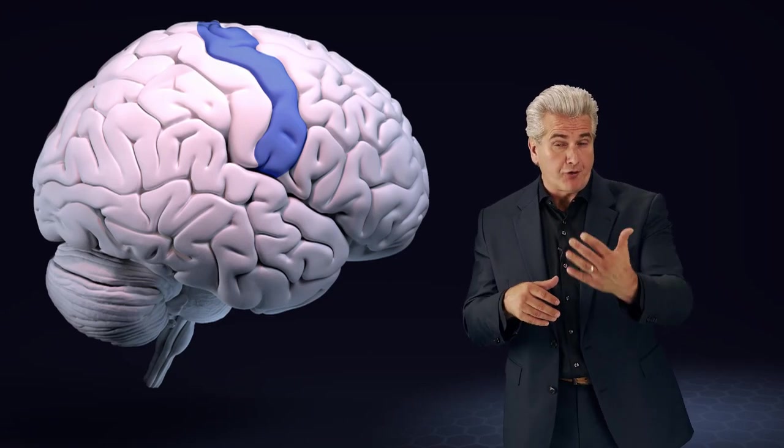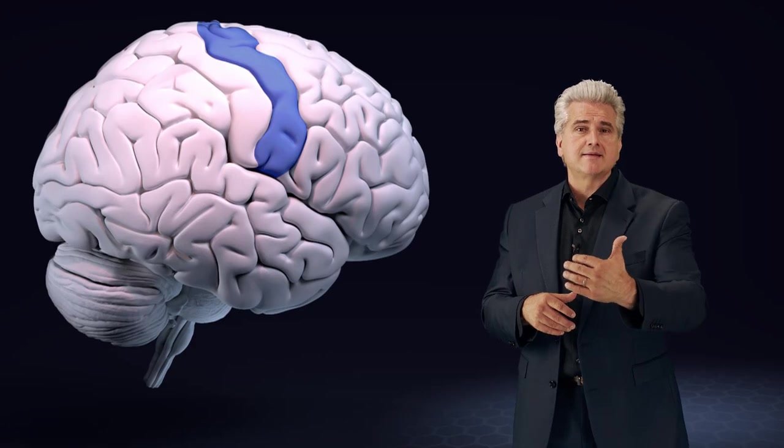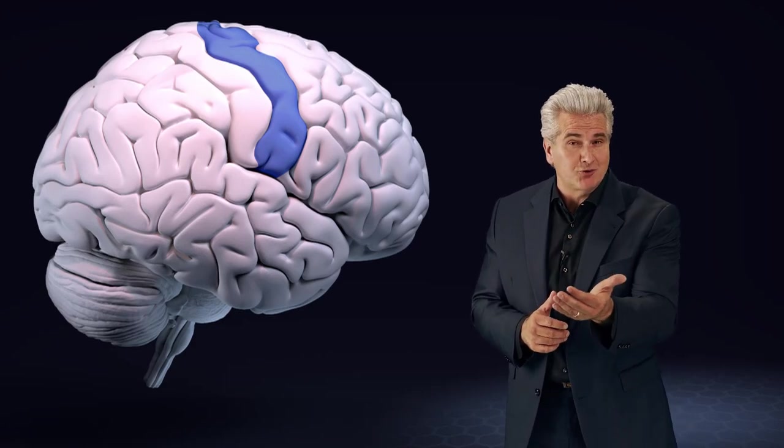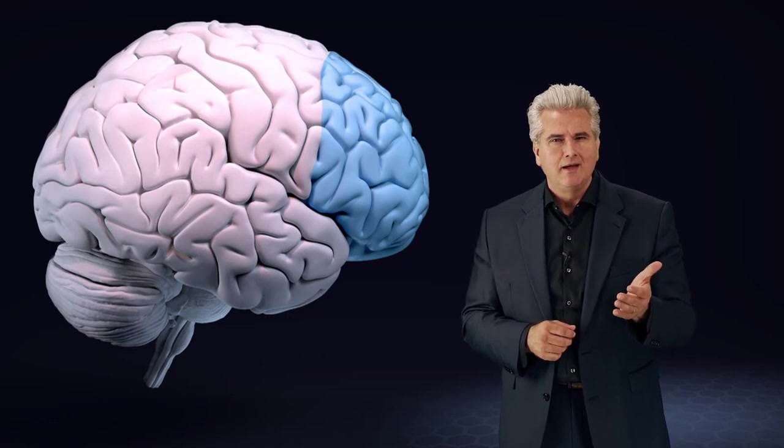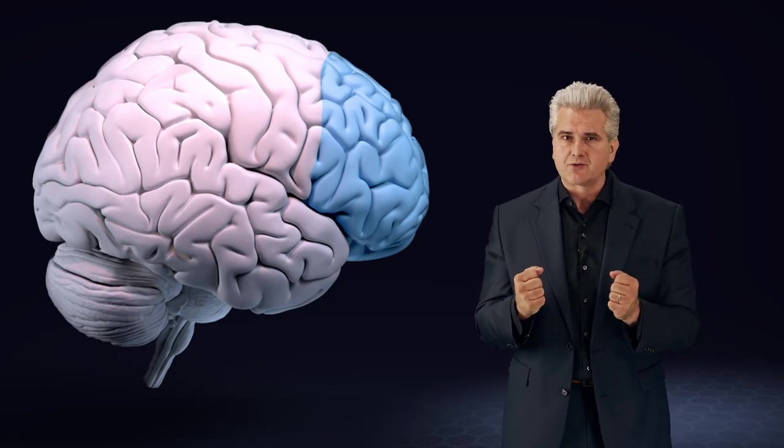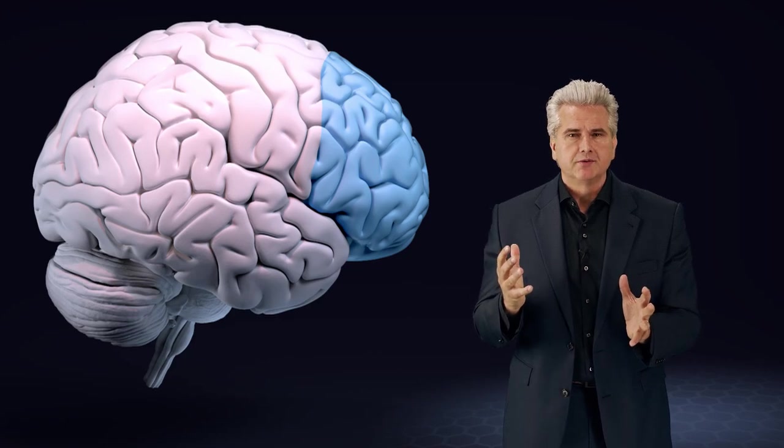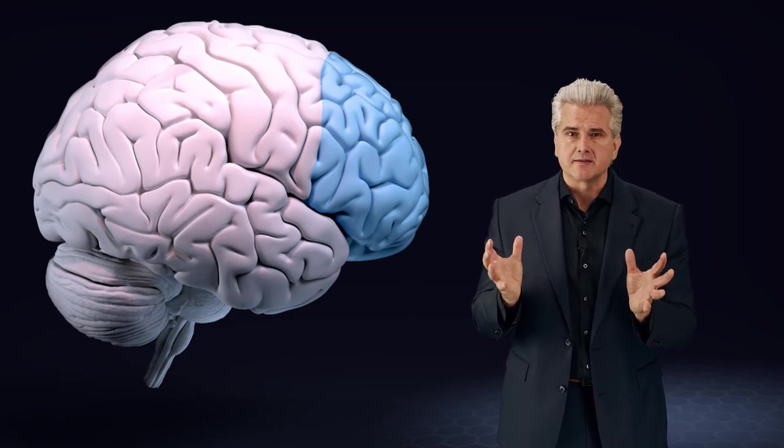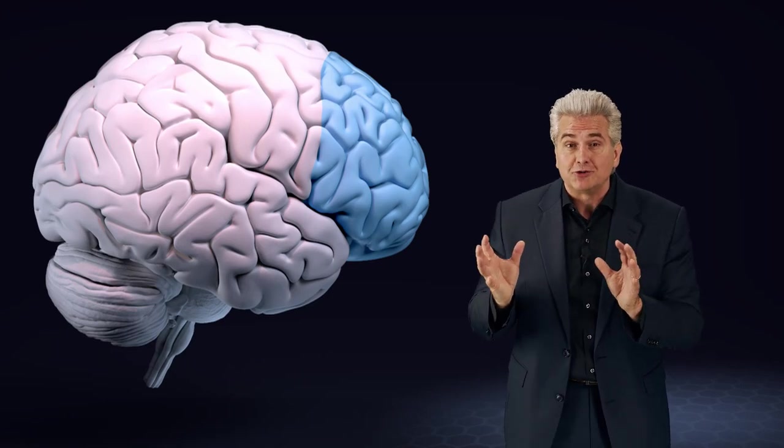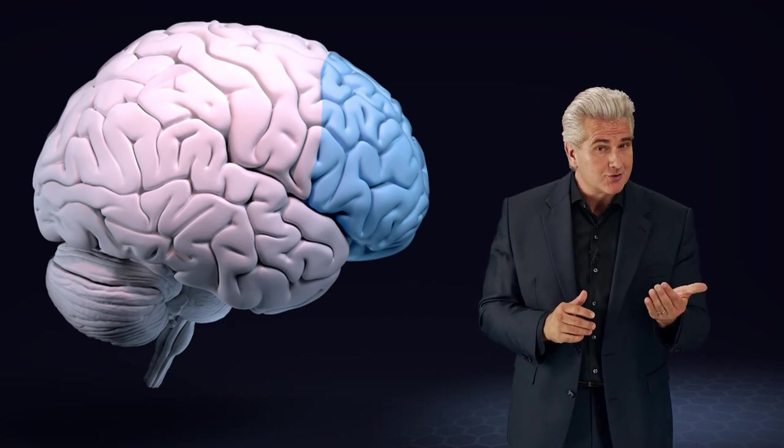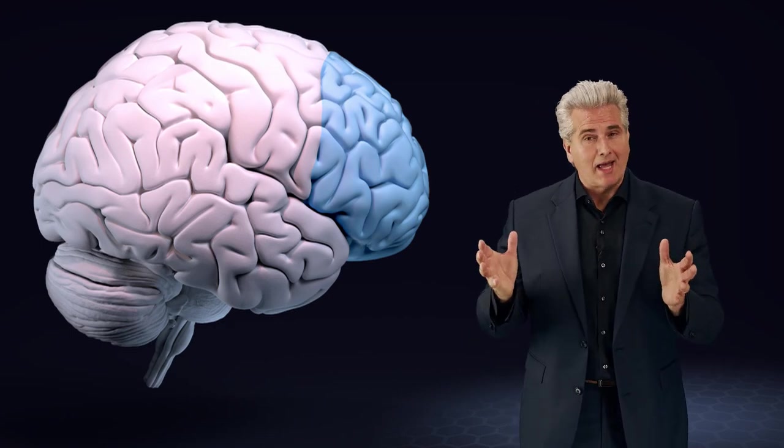The part of the frontal lobe that lies in front of the motor areas, called the prefrontal cortex, is involved in making plans for action and movement, anticipation of things that might, will or could happen, problem solving, regulation, working memory and speech.